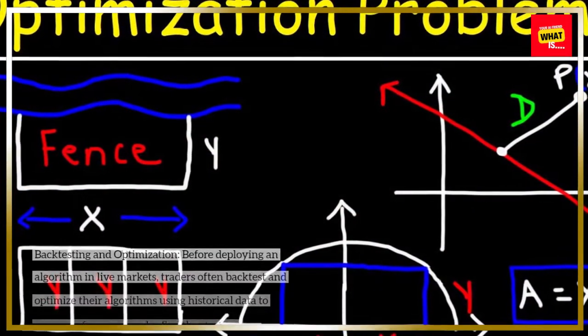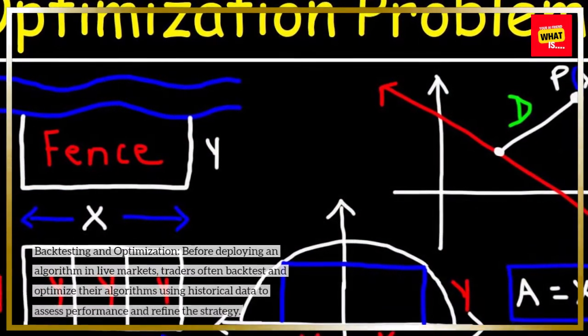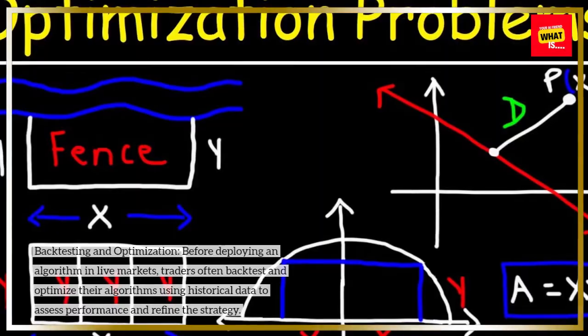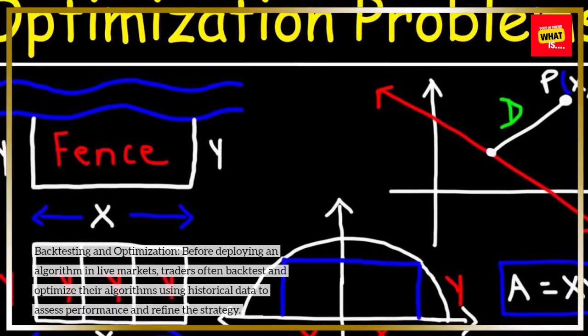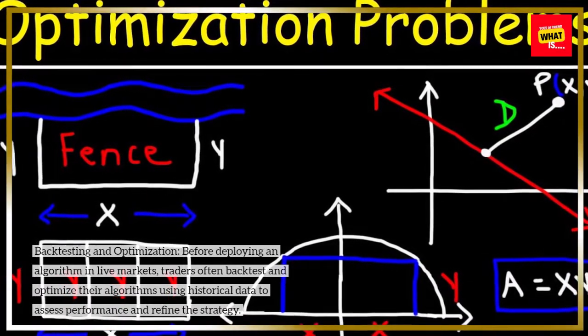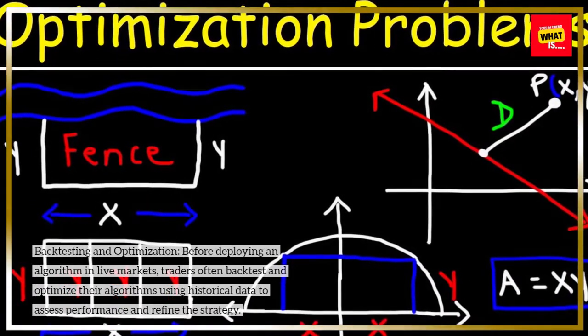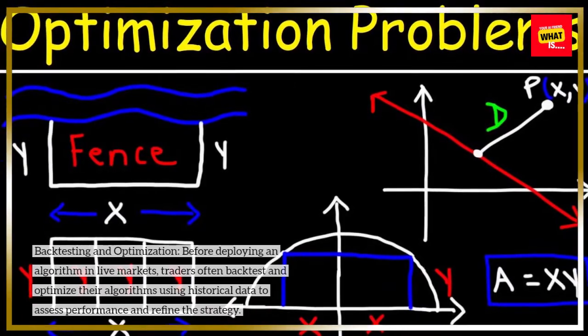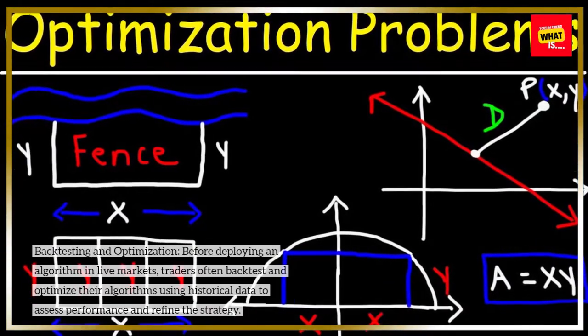Backtesting and optimization. Before deploying an algorithm in live markets, traders often backtest and optimize their algorithms using historical data to assess performance and refine the strategy.